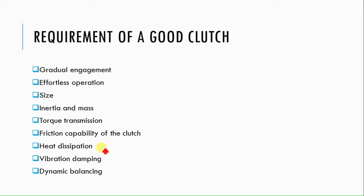Torque transmission capacity should be high and friction capability also high. The heat dissipation capacity of the clutch should be high, because as the clutch is engaged, a large amount of heat is generated, and that heat has to be properly dissipated. So a good clutch has high heat dissipation capacity, and it should also have vibration damping capacity. These are the basic requirements of a good clutch.